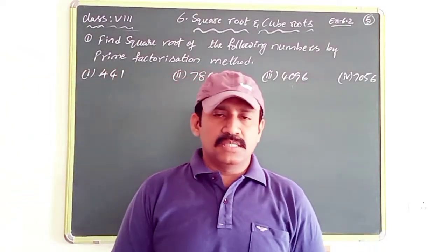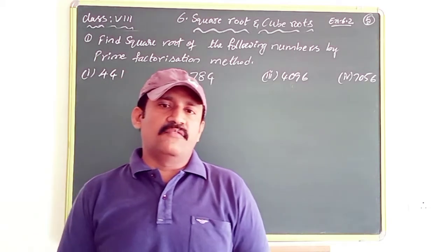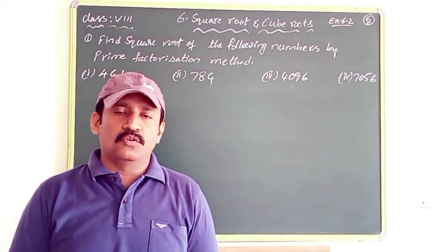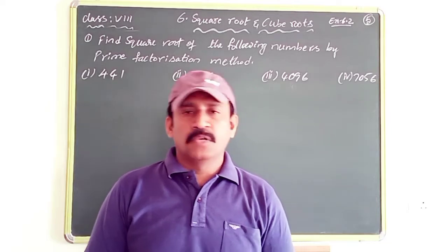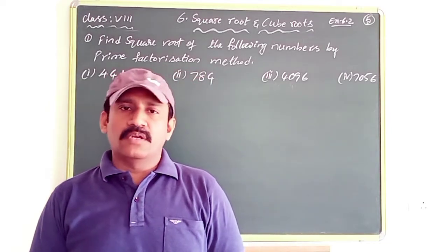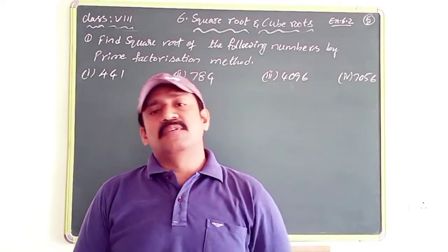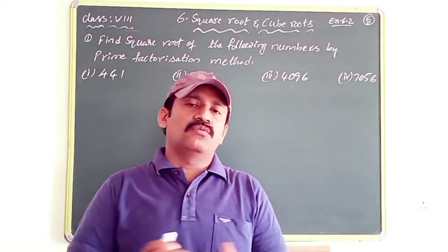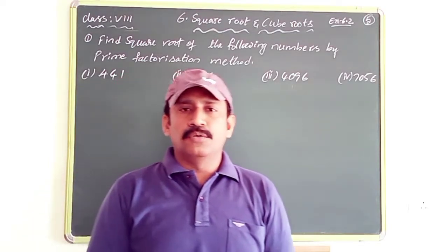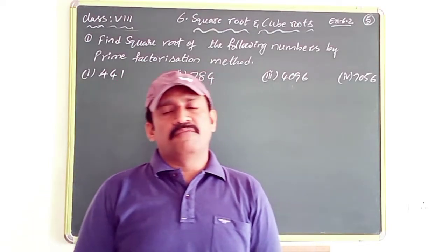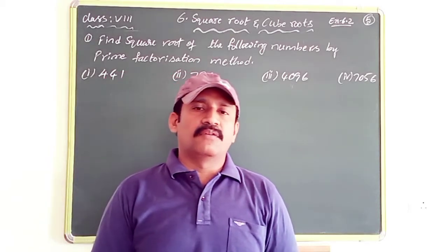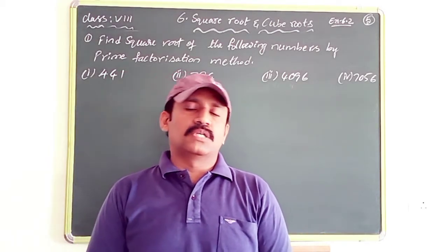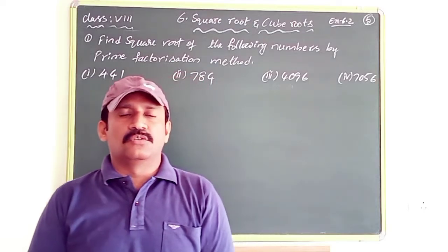In the previous classes we discussed about the square of a number — like 25 into 25 equals 625. Now, if 625 is a given number, how can we find its square root? We use prime factorization. We have different methods like prime factorization and the division method, but right now we are focusing on the prime factorization method.